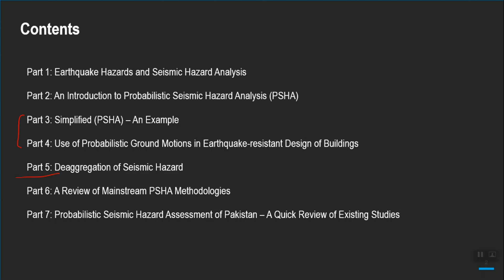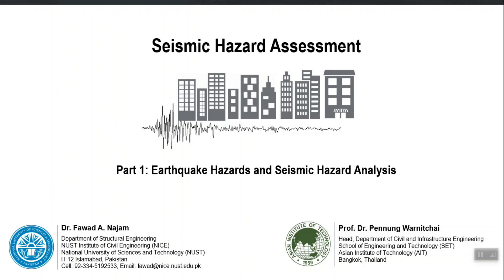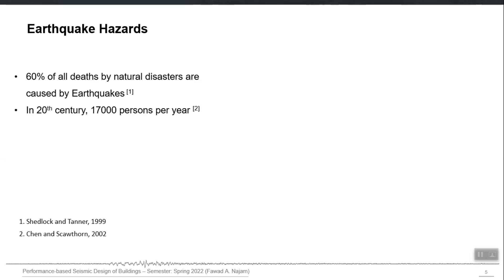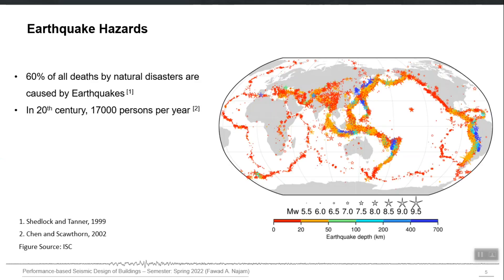Part 1 is a basic introduction — I will quickly sweep through it. It is about the introduction to earthquake hazards: what I mean when I say ground shaking hazard or any other earthquake hazard. Earthquakes are responsible for around 60 percent of all deaths caused by natural disasters, and one main reason is that it is one of the disasters which gives us very little warning time.